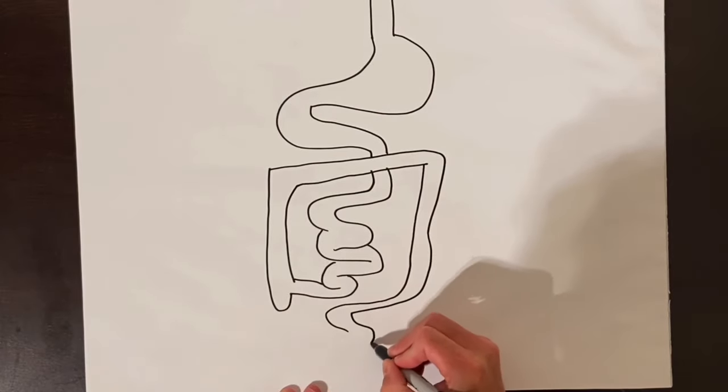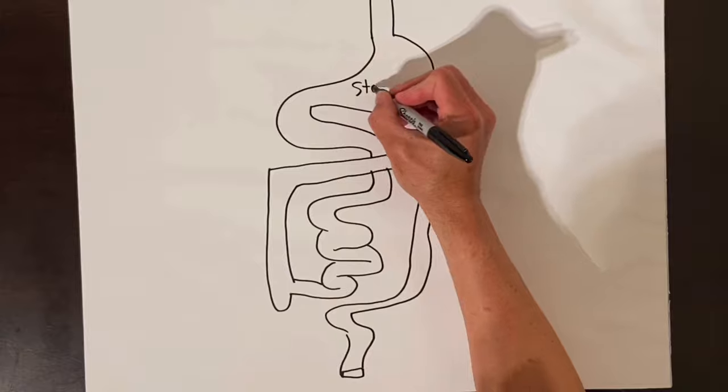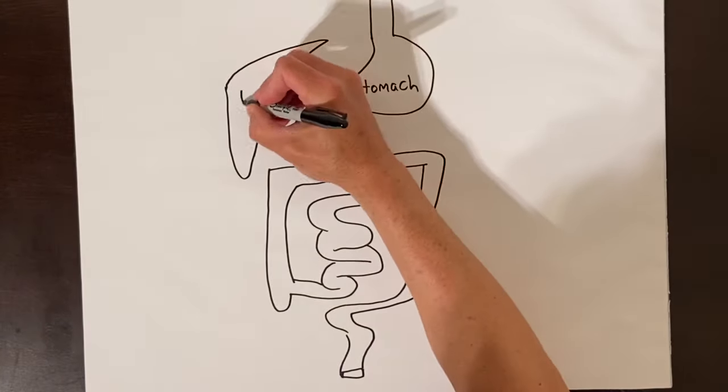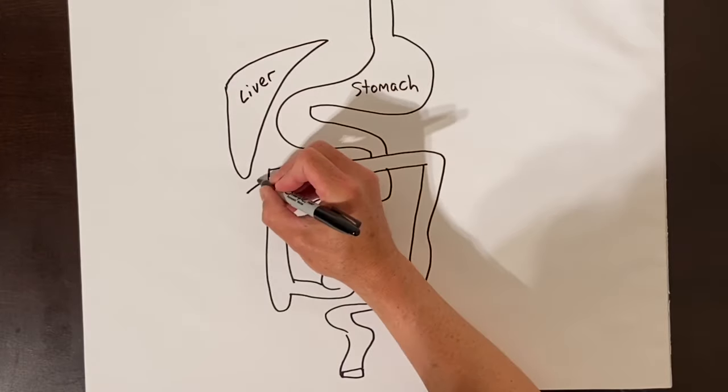Let's review the anatomy of the intestinal tract. When you eat food, it goes through the esophagus and into the stomach, then into the small intestine for many feet. Then the small intestine empties into the colon in the right lower abdomen.